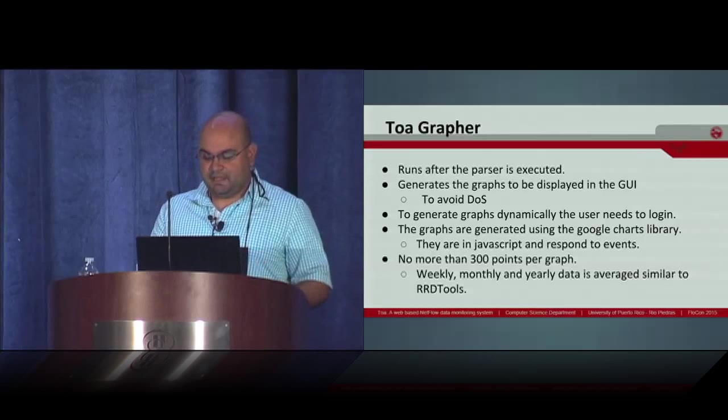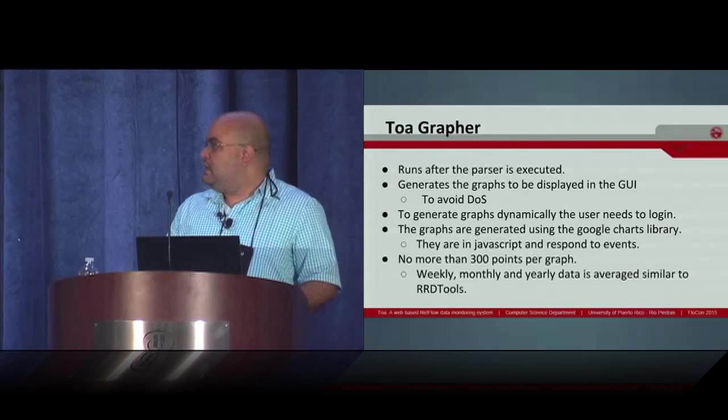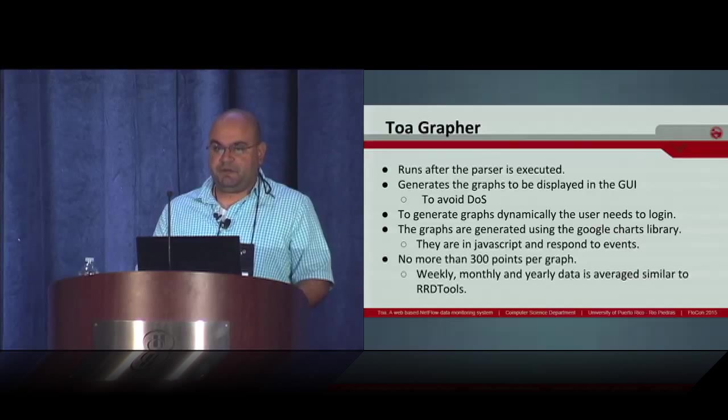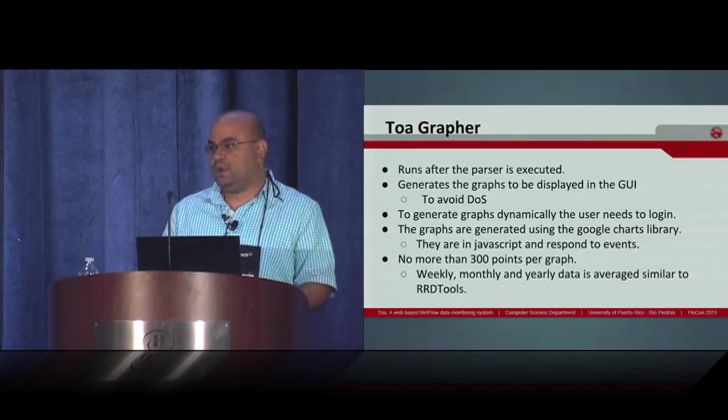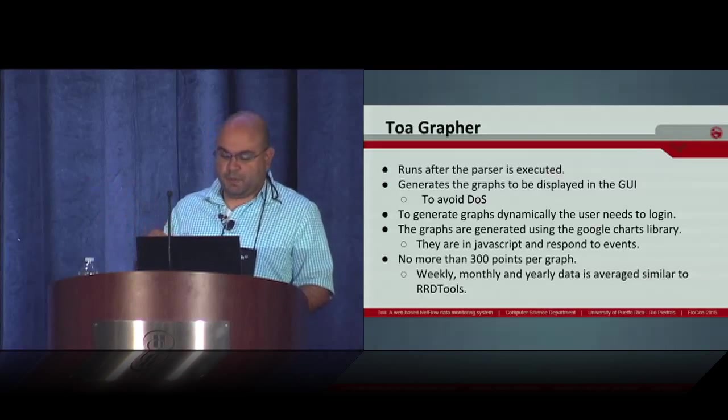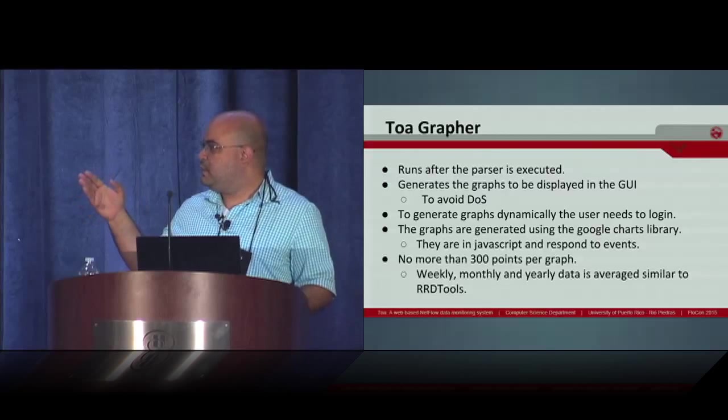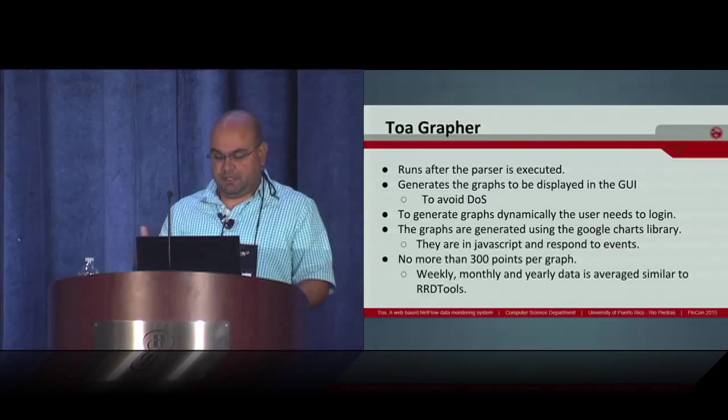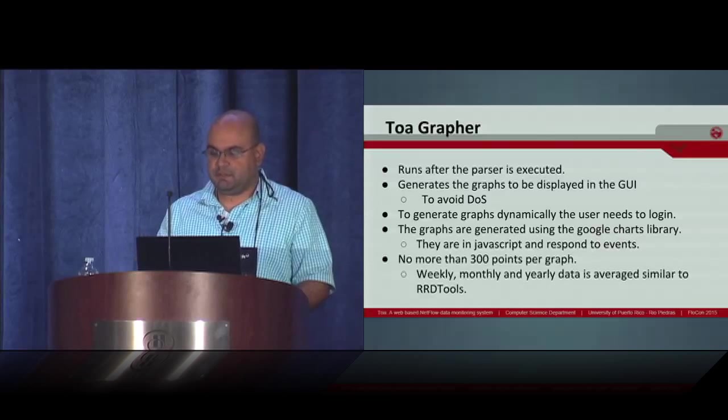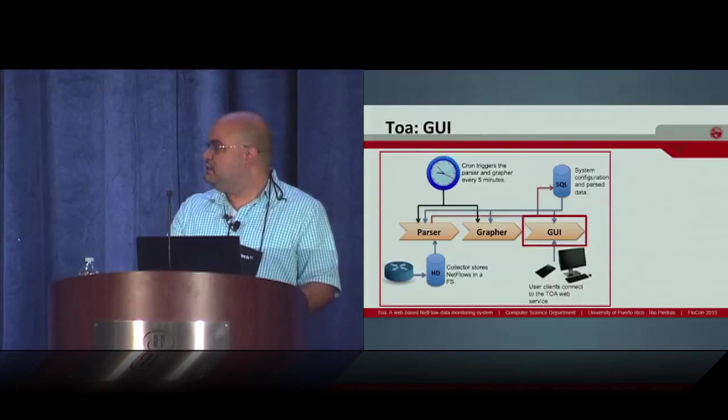Because they are in JavaScript, they can respond to events. There are no more than 300 points for timeline graphs. So when we want to generate graphs for weeks, monthly, and yearly information, we do some averaging like in RRD tools.